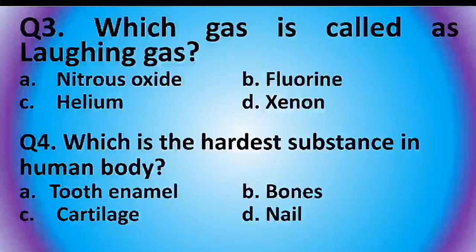Question 3: Which gas is called laughing gas? Options are: nitrous oxide, fluorine, helium, or xenon. The answer is option A: nitrous oxide.